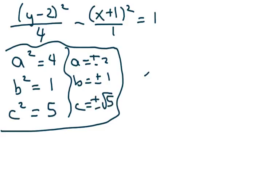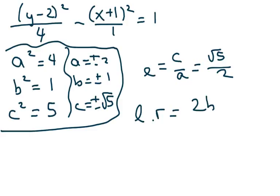So your eccentricity is c over a, and our c is square root of 5. And our a is 2. And our LR is 2b squared over a, which equals 2 times 1 over 2, which equals 1.